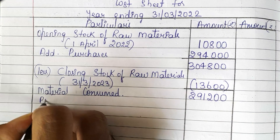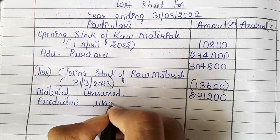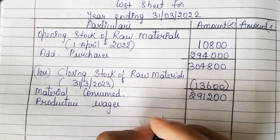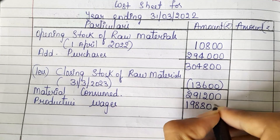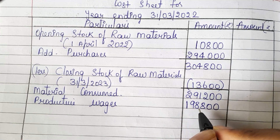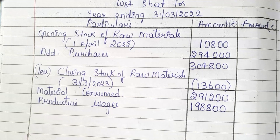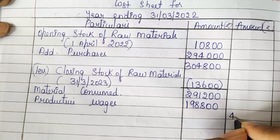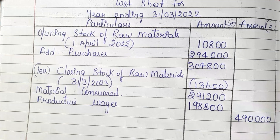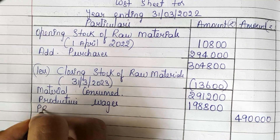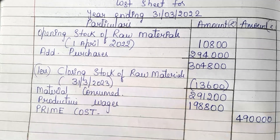For this, we need to add productive wages. In the question they have given productive wages of 1,98,800. Now add 1,98,800 and 2,91,200 — we will be getting 4,90,000. This 4,90,000 is known as prime cost.